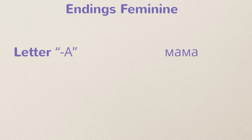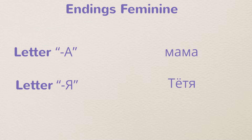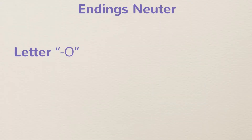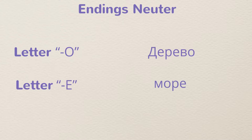The most common endings for feminine nouns in the singular nominative case are А, like 'mama' (мама), or a soft sign, like 'tetya' (тётя). Note that nouns ending in a soft sign can be tricky — they may be masculine or feminine, so if you're unsure, refer to a dictionary. For neuter nouns, the most common endings are О, like 'derevo' (дерево), or Е, like 'more' (море) or 'pole' (поле).